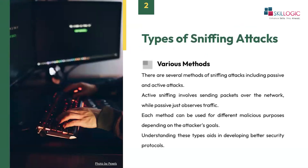There are different types of sniffing. The first is passive sniffing. In a passive sniffing attack, the attacker just watches the traffic going through a network without doing anything else. We perform a passive attack when we want to gather information about a target on a network — for example, login credentials or email messages.